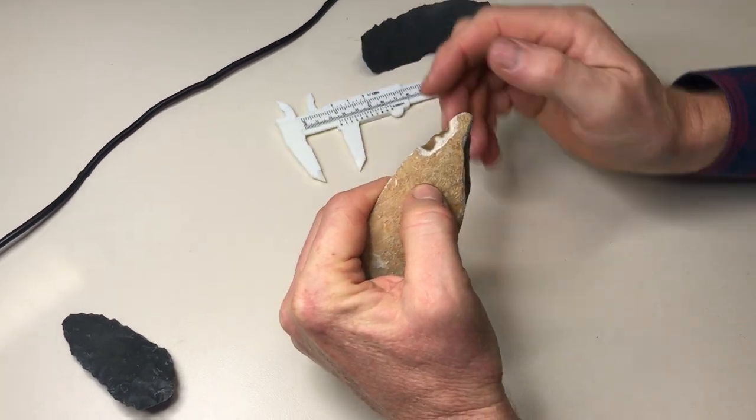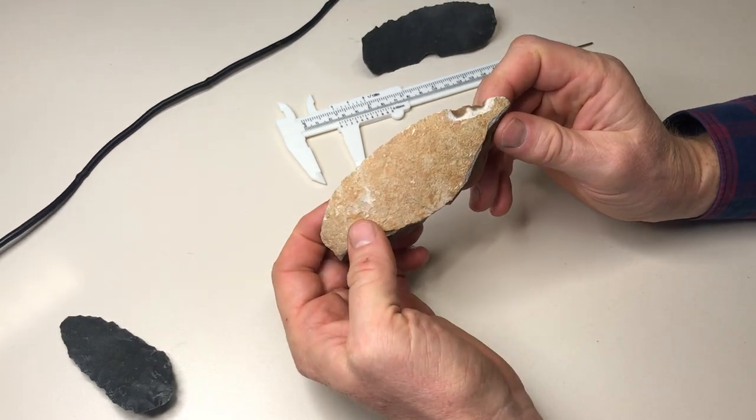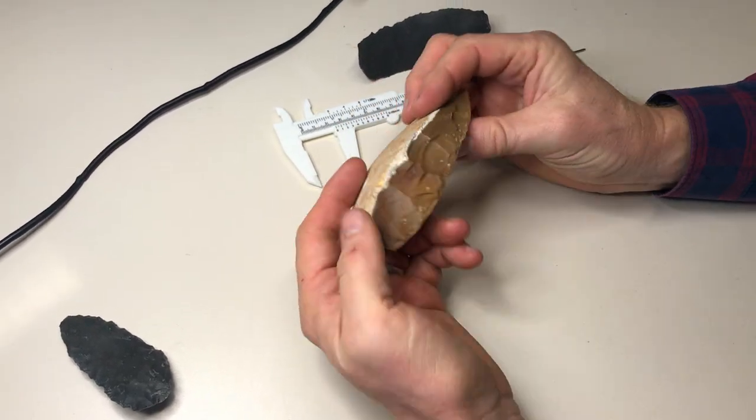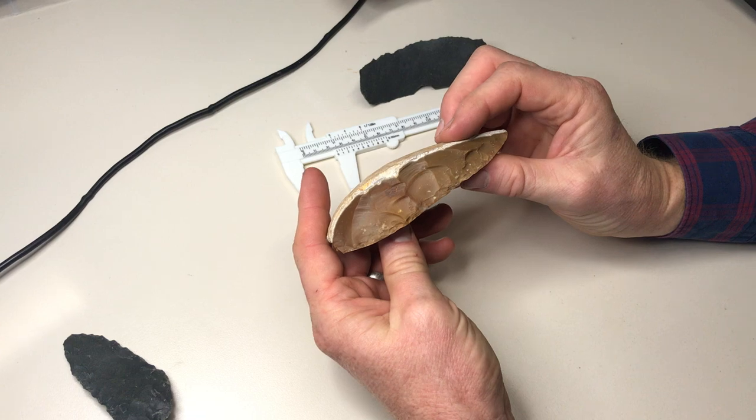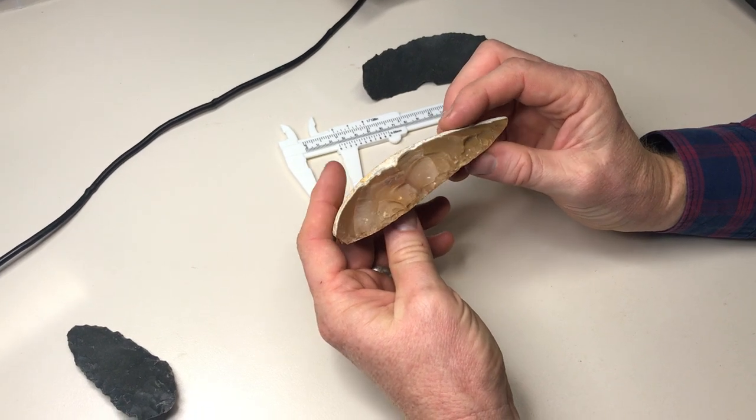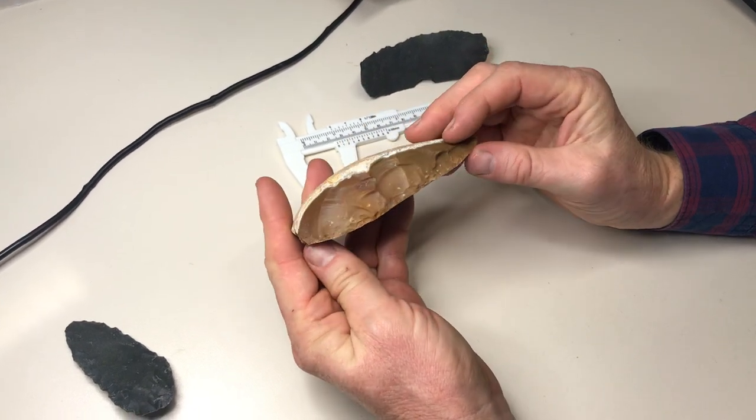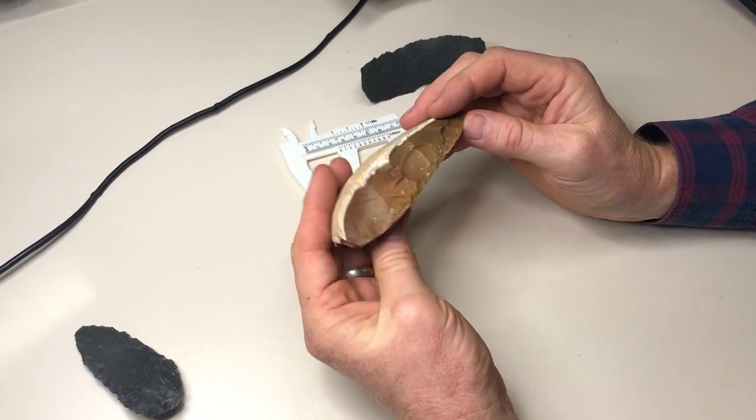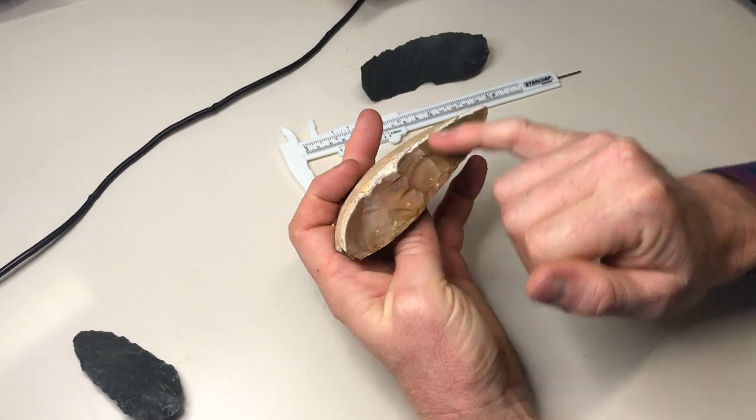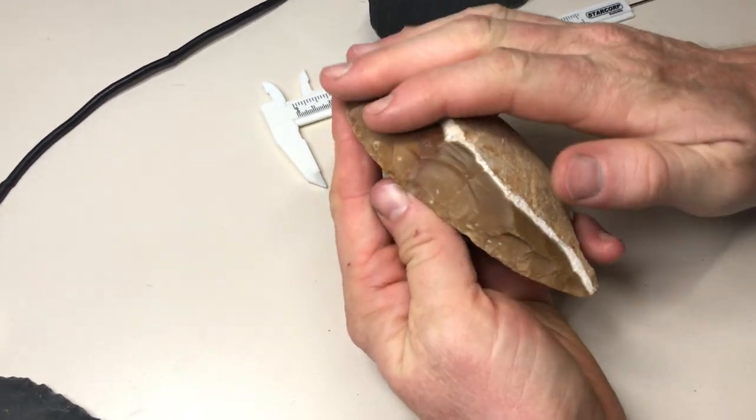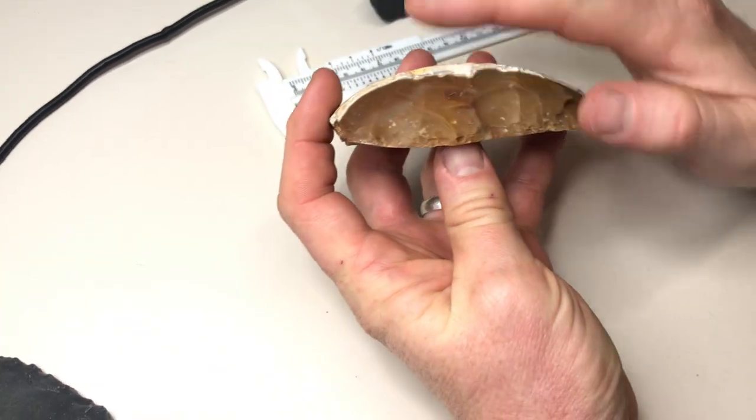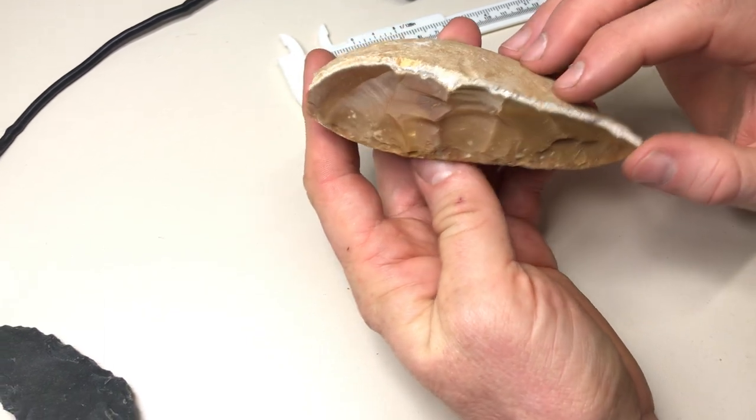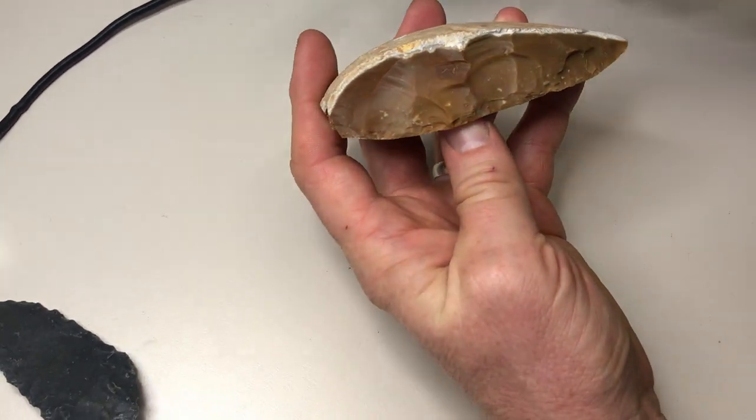The second technique that you're going to measure is our Kuhn or GIUR, geometric index of unifacial reduction, and that's described in your prac worksheet for this week. But how do we actually measure it? So typically what we do, it's only suited to unifacial retouch, so this kind of classic scraper retouch which is reasonably steep and unifacial on the dorsal.